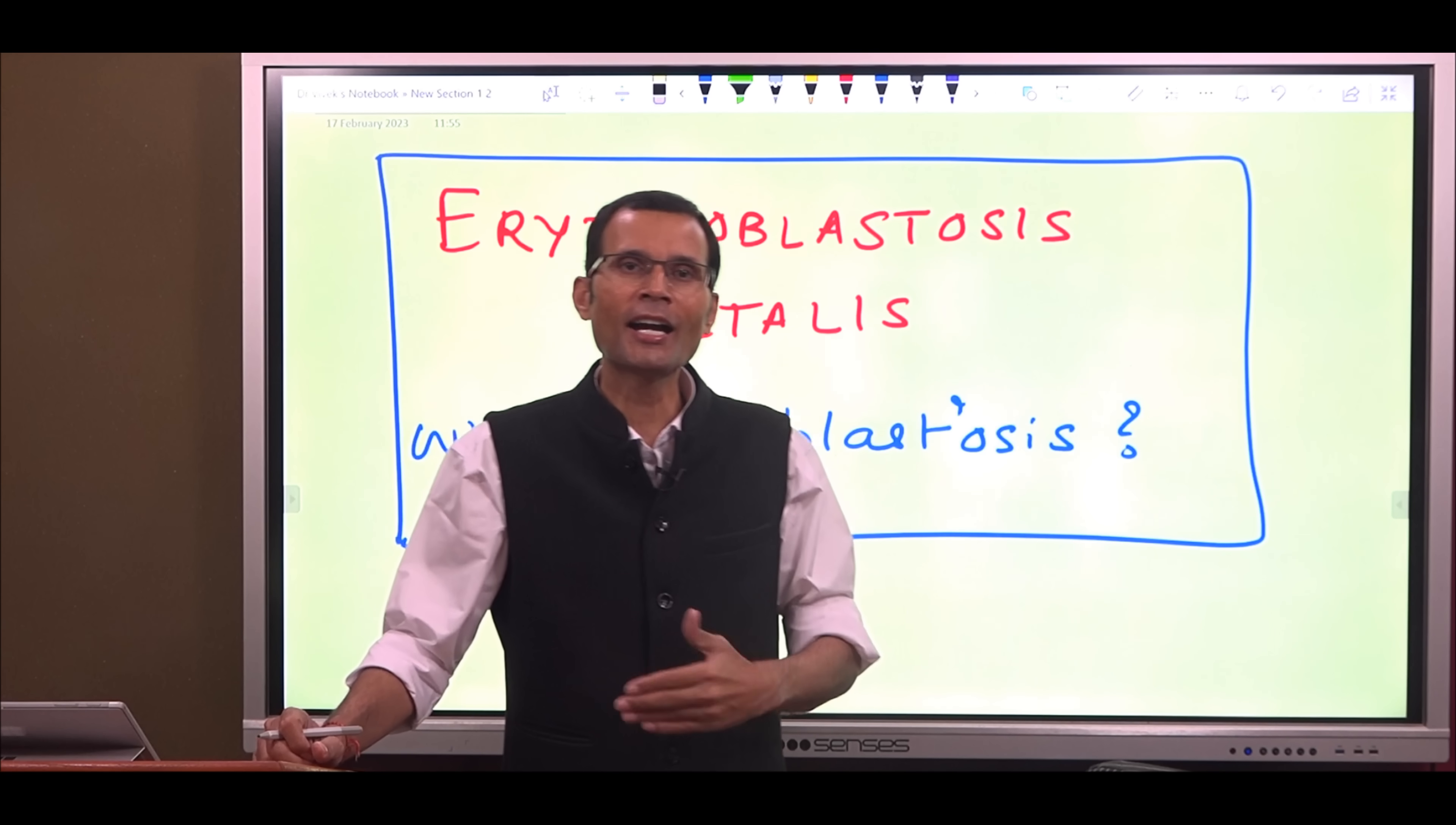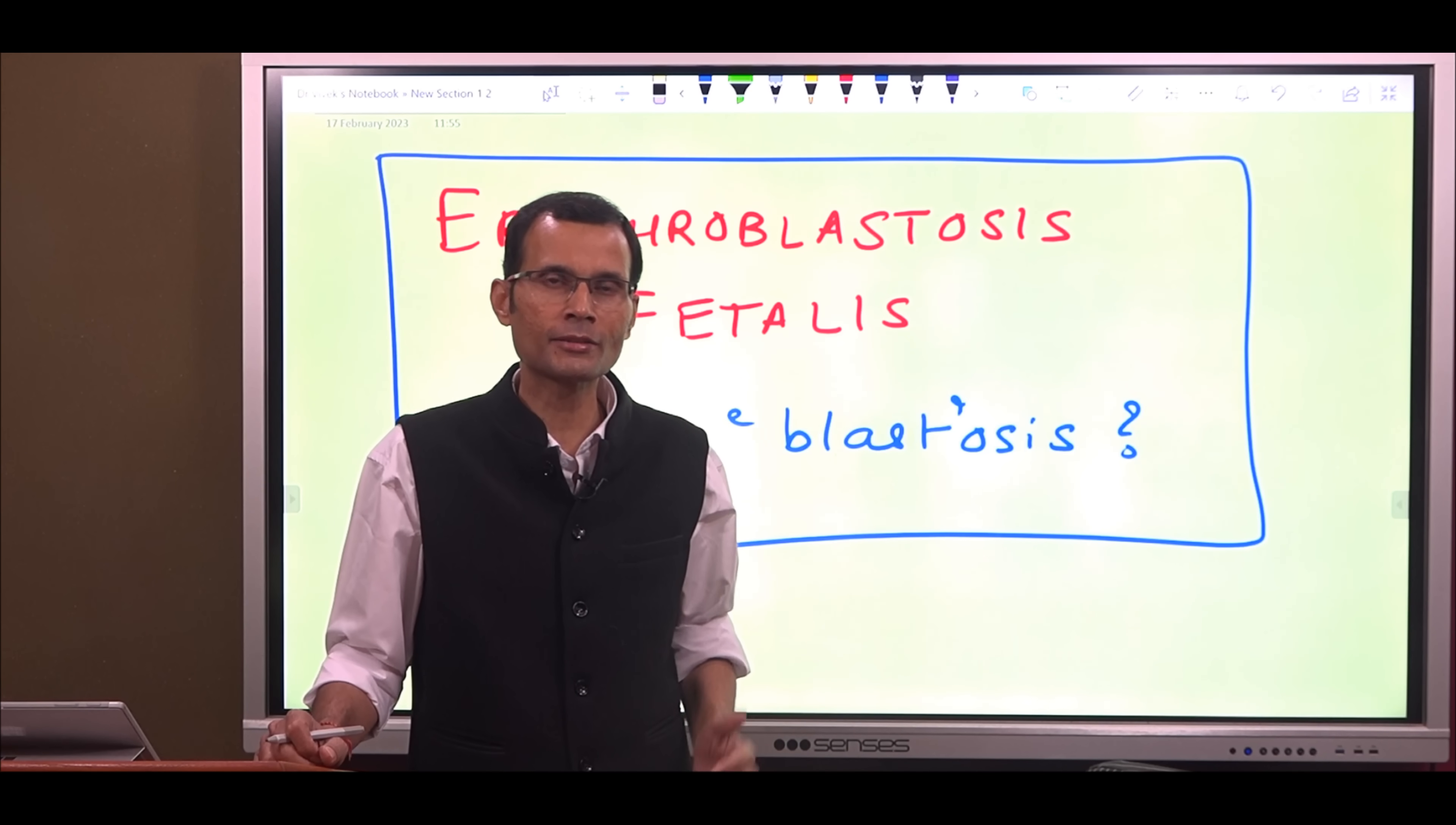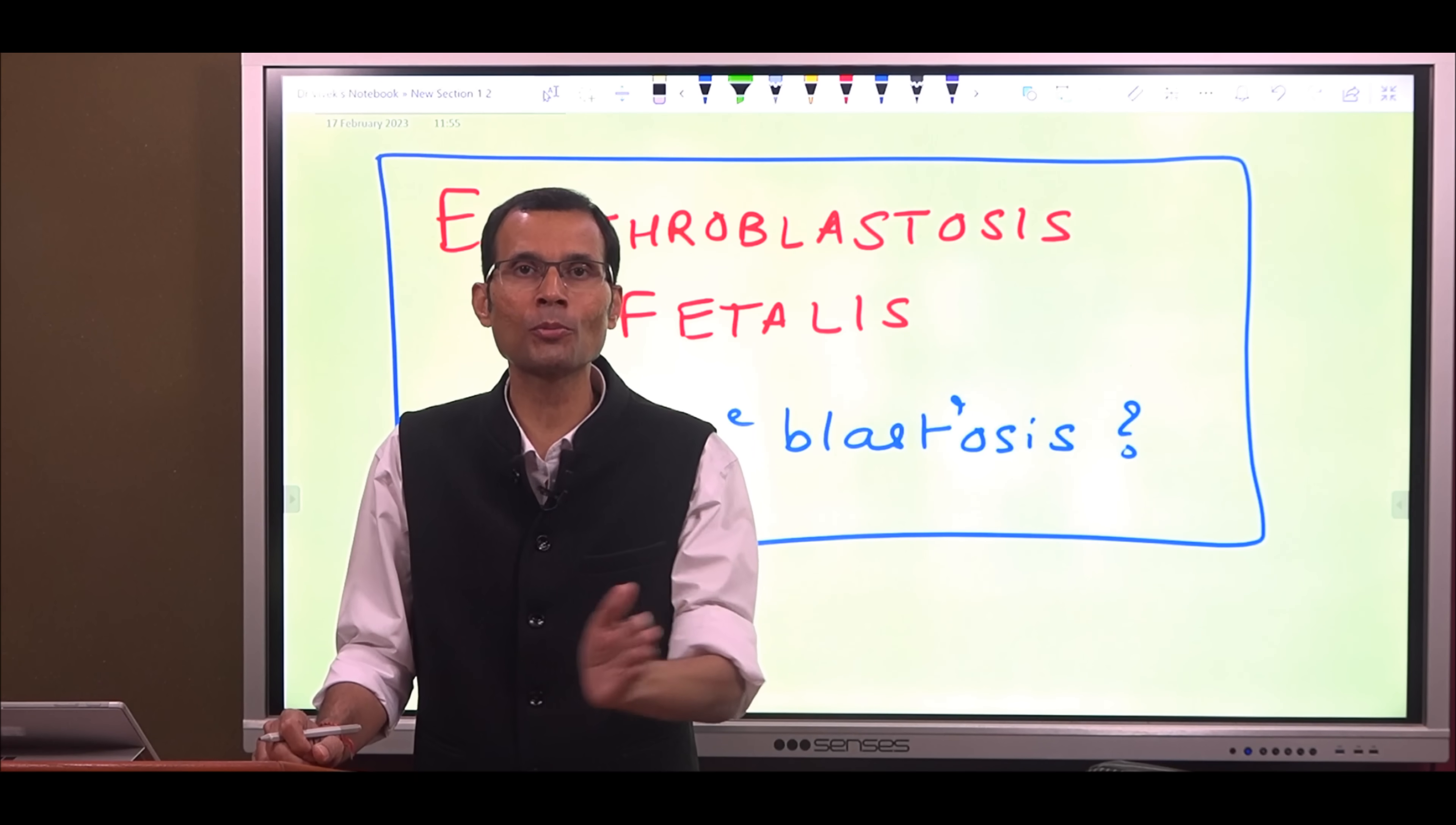Then I had to prompt him that what are the precursor stages of the RBC as in erythropoiesis? Pro erythroblast, early normoblast, intermediate normoblast.